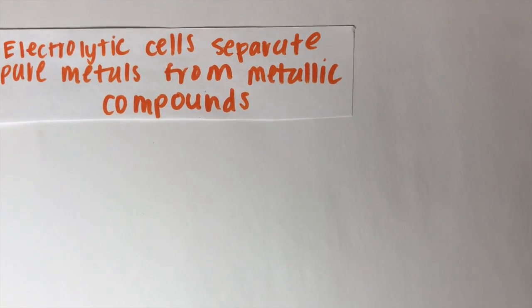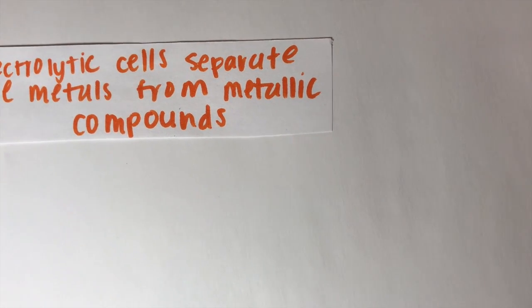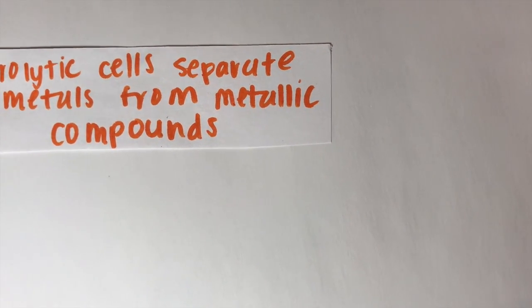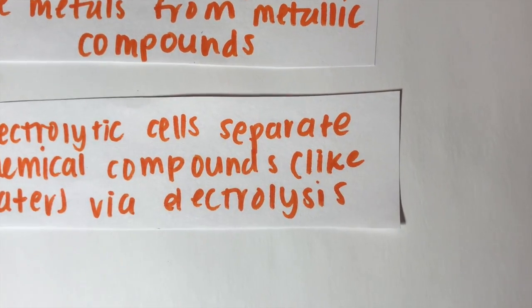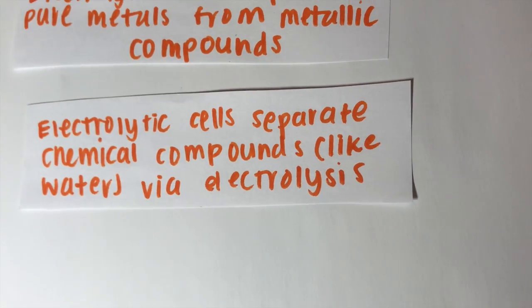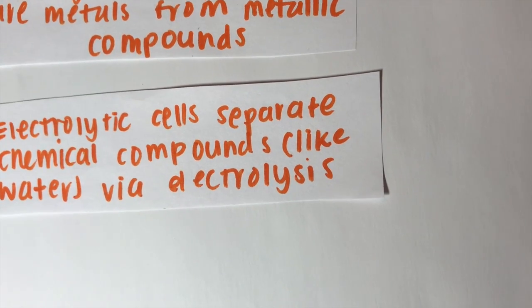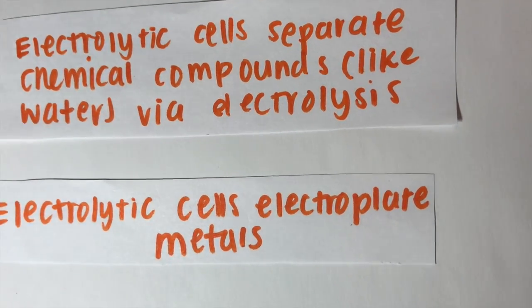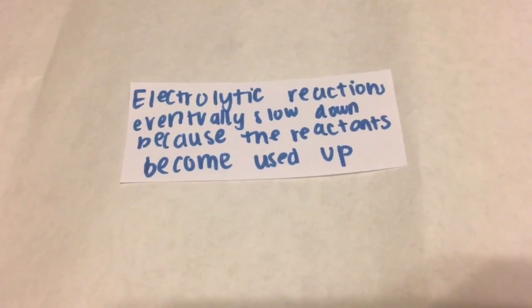Cells have many different functions. Electrolytic cells can be used to separate pure metals from metallic compounds. They also have many other uses. These cells can also separate chemical compounds like water via electrolysis. Cells have more practical uses as well. Electrolytic cells can be used to electroplate metals.